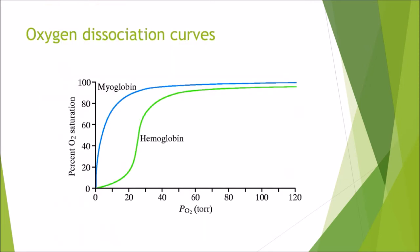Hemoglobin and Myoglobin have different affinities for oxygen, visible in their dissociation curves. For hemoglobin, only one oxygen binds initially, then the conformational change causes a sigmoidal spike in binding. Myoglobin, being a single polypeptide chain, allows oxygen to bind more readily, giving a hyperbolic curve. Notably, the affinity of Myoglobin for oxygen is higher than Hemoglobin's. At a certain partial pressure of oxygen, Hemoglobin will transfer oxygen to Myoglobin, allowing Myoglobin to take up oxygen from Hemoglobin in the tissues.